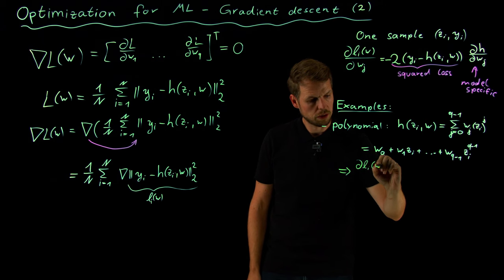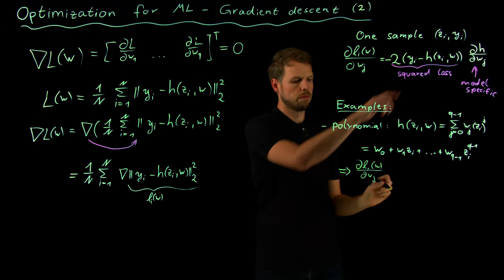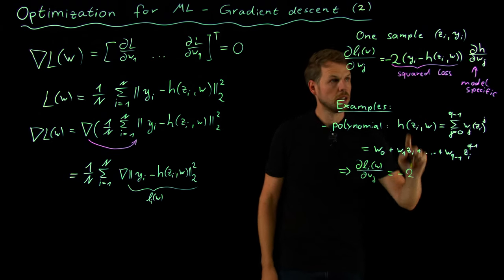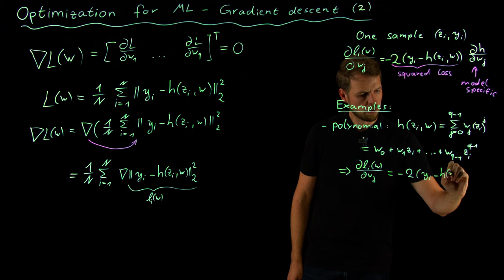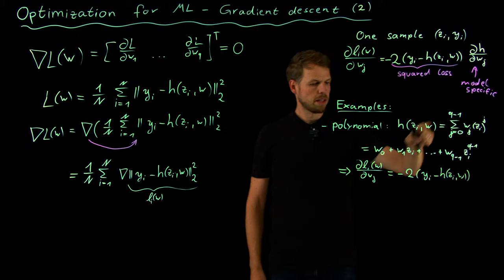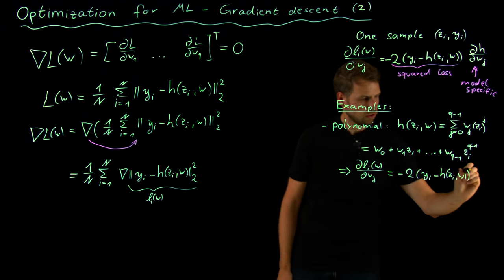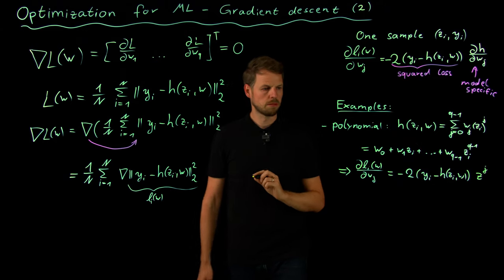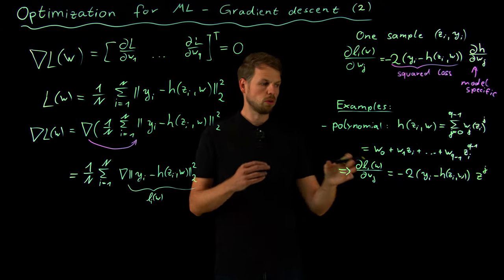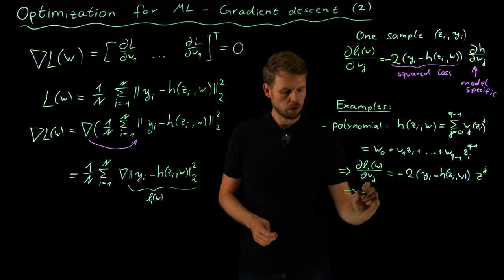So the derivative of the i-th loss with respect to dw_j will be simply what I had before: minus 2 times y_i minus h of z_i and w, multiplied by the j-th term. And if j is 1 we have z, if j is 2 we have z squared, so this will give me z to the power of j. So we see here a very nice way to calculate the derivative, and as I said it's a linear model so we do have a closed form solution.